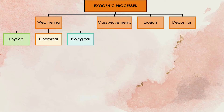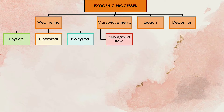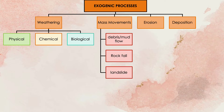Mass movements, on the other hand, is the geomorphic process by which soil, sand, or rock move downslope, typically as a solid, largely under the force of gravity. It is frequently characterized as a flowing movement. Examples include debris or mud flow, rock fall, or landslide.